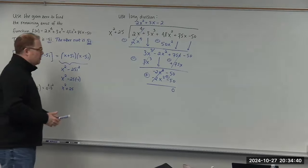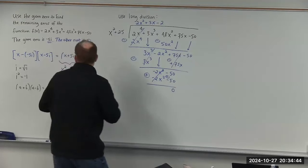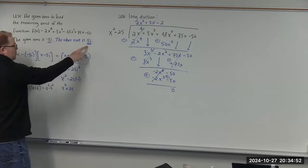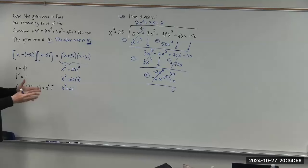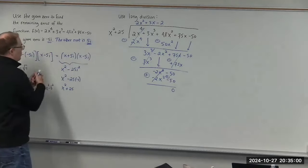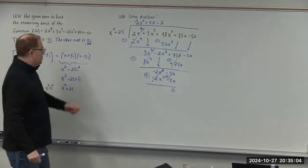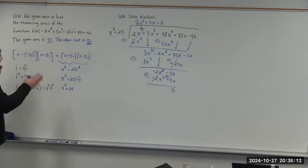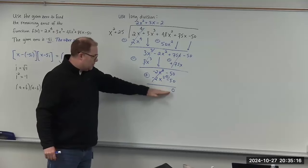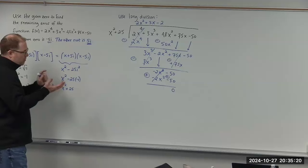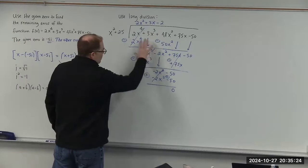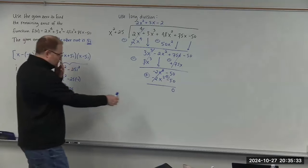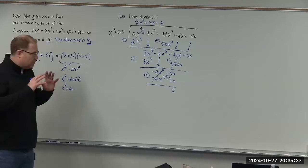It's not a surprise that we get remainder 0, because we knew that negative 5i and 5i are roots of this polynomial. The polynomial x squared plus 25 that we constructed must be a factor of the original. If you're doing a problem like this and you end up with a nonzero remainder, that means either the long division wasn't done properly or the construction of that factor polynomial wasn't done correctly — so use this as a checkpoint.